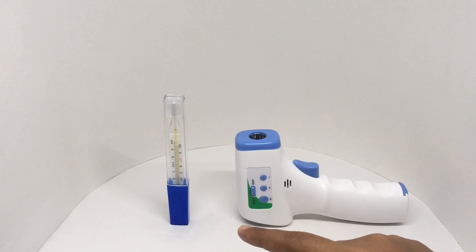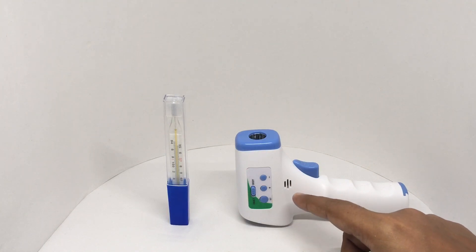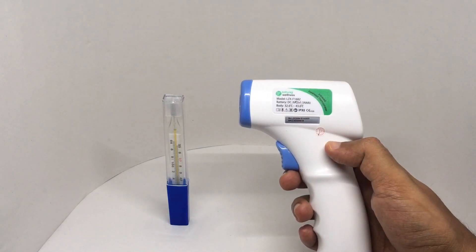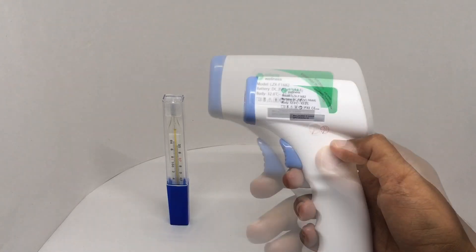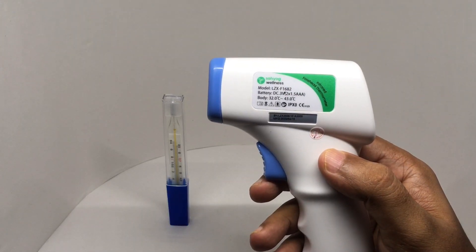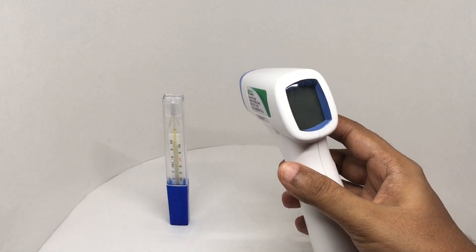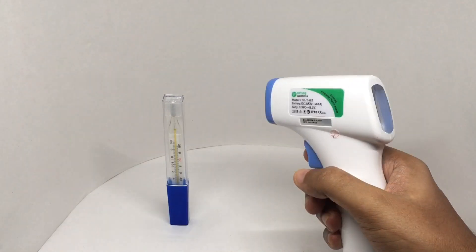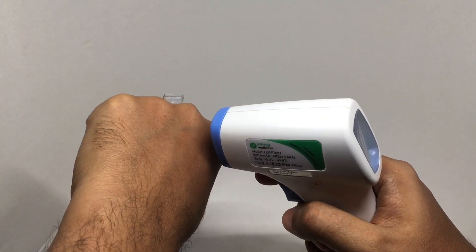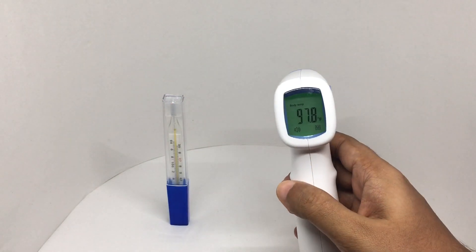The costly infrared thermometer costs around 3000 rupees or 40 dollars. This is by Sahiyok Wellness. That's the range of measurement, and it can measure within one second as you can see.